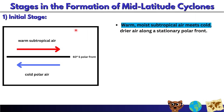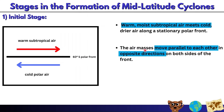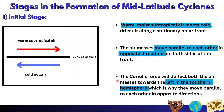Now we look at the stages of formation. Stage one is the initial stage. In this stage, warm moist subtropical air meets cold drier air along a stationary polar front — also called a stationary front. In the diagram, warm subtropical air is represented by a red arrow and cold polar air by a blue arrow. The two air masses move parallel to each other in opposite directions at the polar front. The Coriolis force deflects both air masses towards the left in the southern hemisphere.